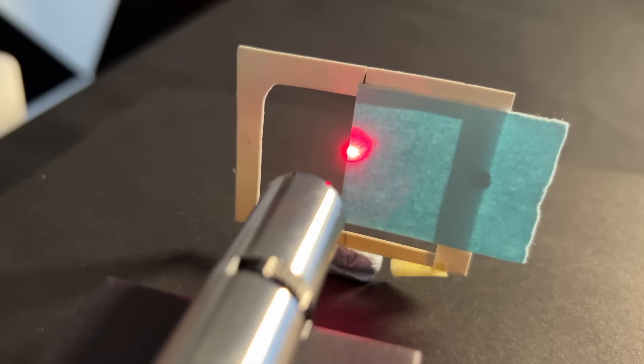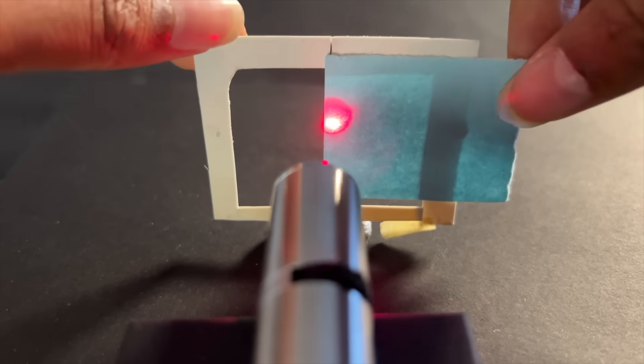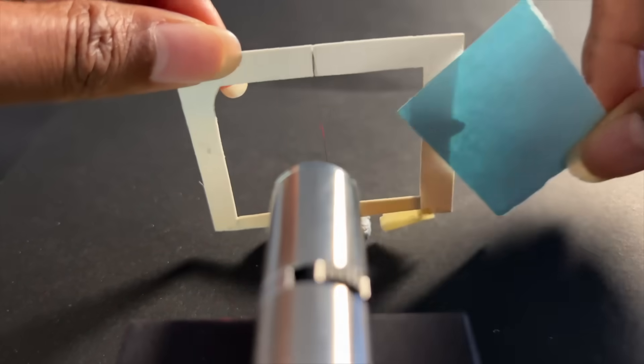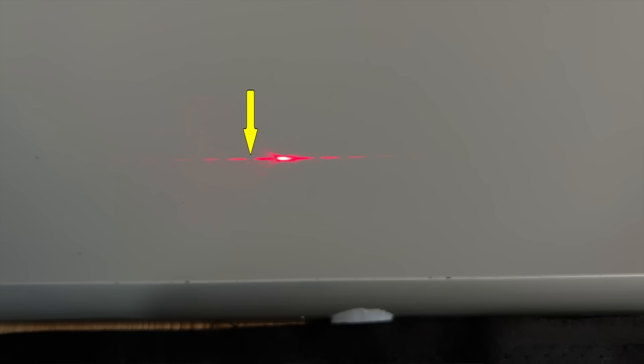If we had blocked the right path instead, we'd have gotten a very similar result. And again, notice that at least some of the light falls on this spot. Now let's open both paths simultaneously and the light just disappears from this spot.